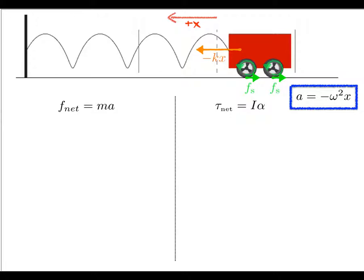Going back to F_net equals ma, we write minus kx plus 4fs — because there are four wheels — equals the mass of the cart plus the mass of the four wheels, times acceleration. That's about all we can do on the left-hand side.